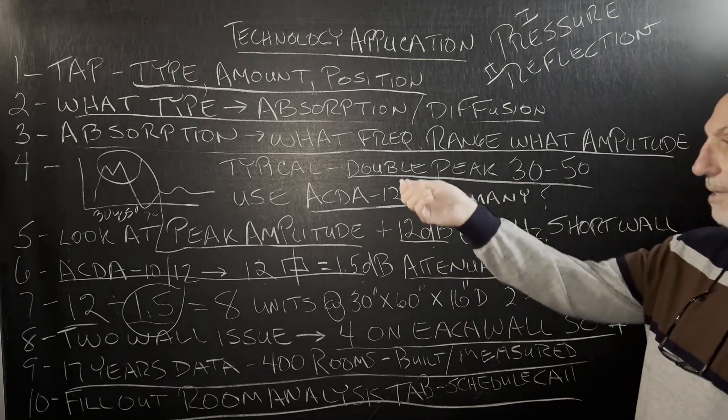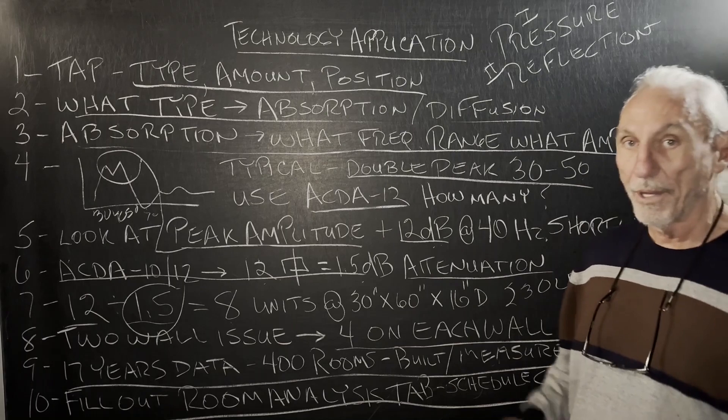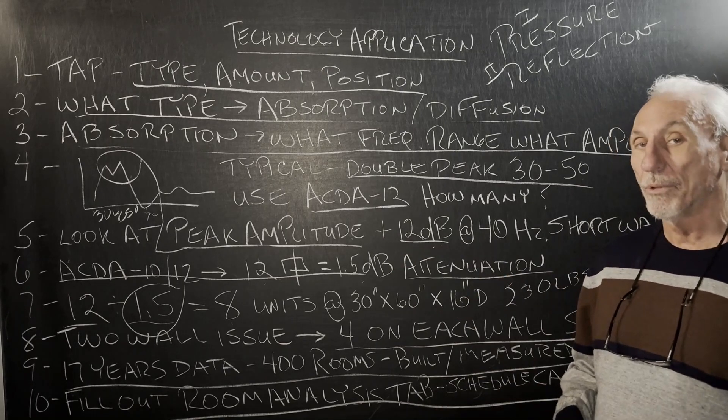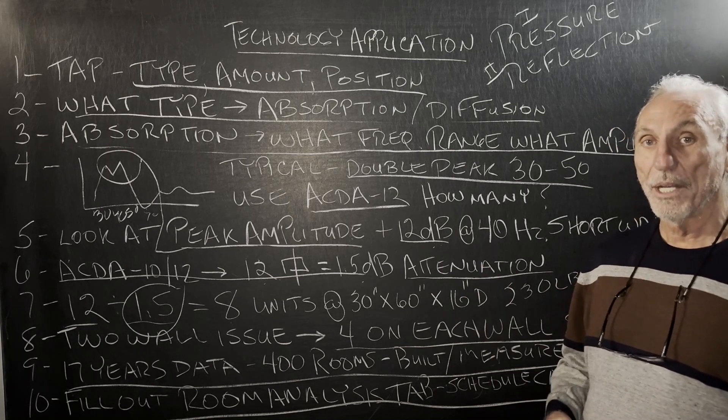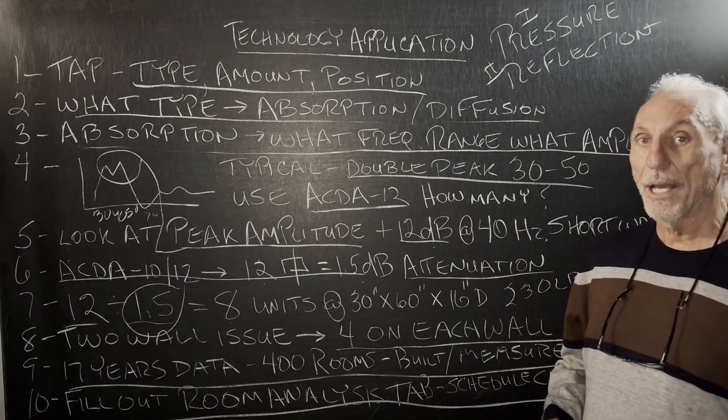We got to absorb this excess energy created by that particular dimension. So let's take an example. Let's say we have a 12 dB peak, 40 hertz, and it's on the short wall. We have to know that. So we got a 40 hertz problem on our 14 foot wall, let's say, and it's plus 12 plus 13. What treatment type are we going to use? TAP.